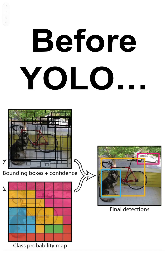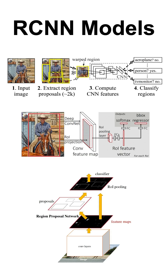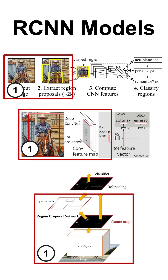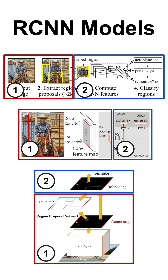Before the introduction of YOLO, the most popular way of performing object detection was by using the RCNN models that first extract some regions from the image and then classify each one into the classes of interest, thus performing two steps.